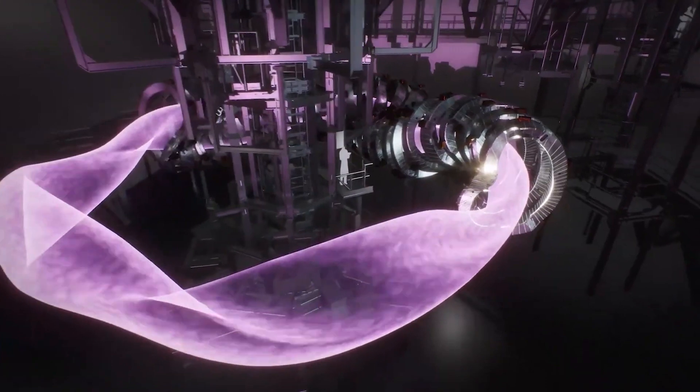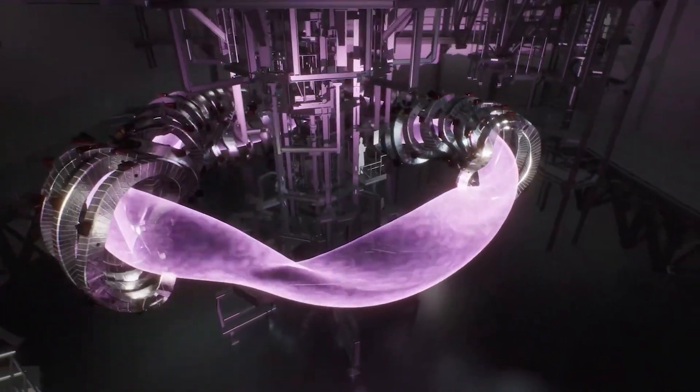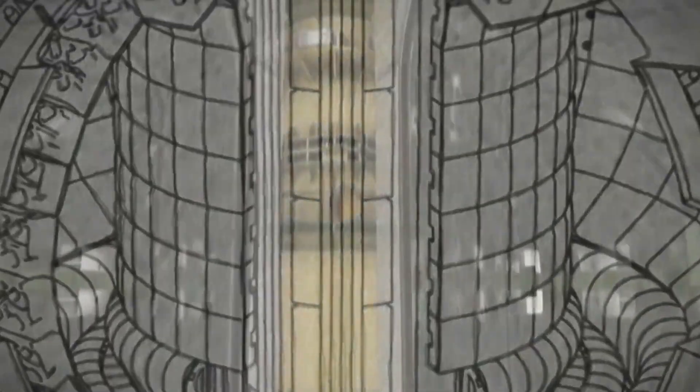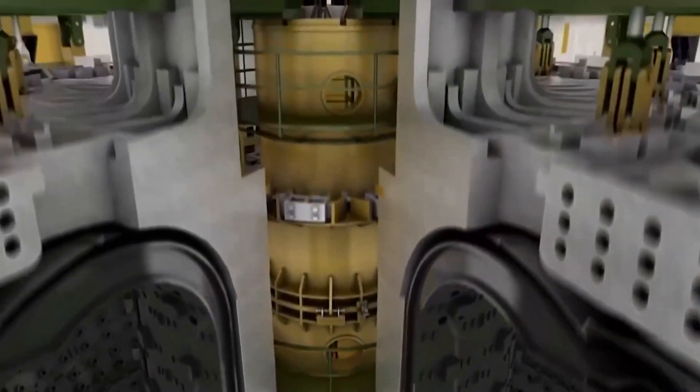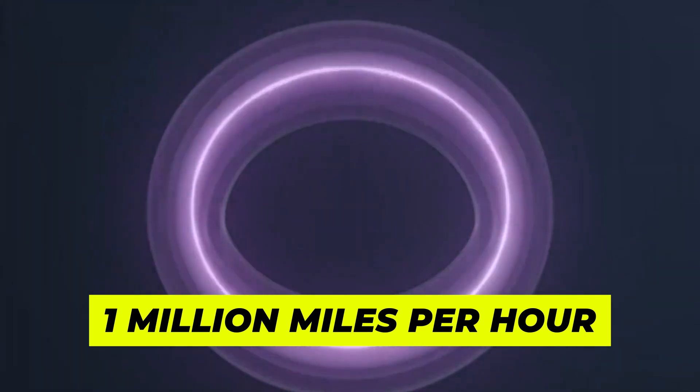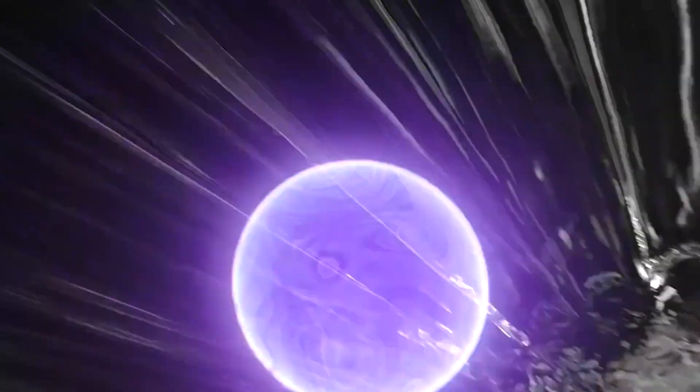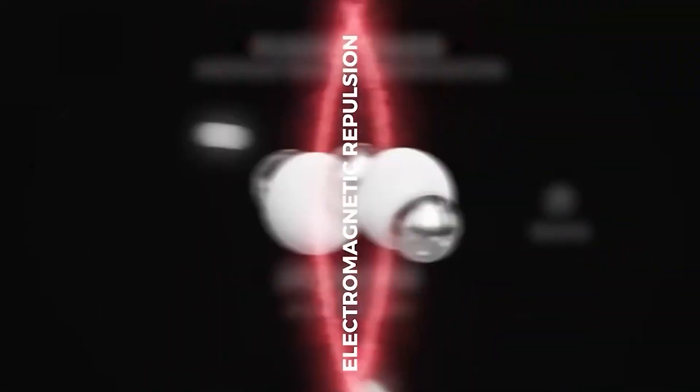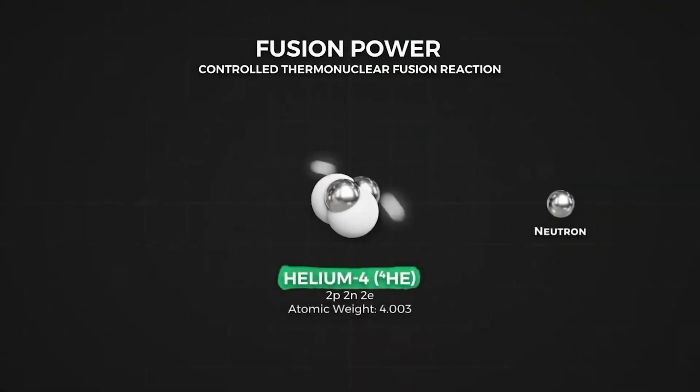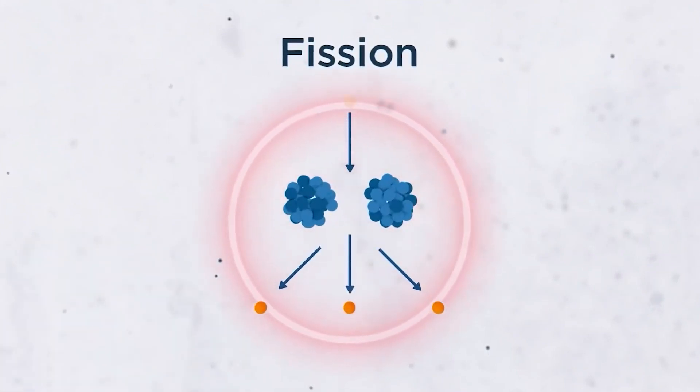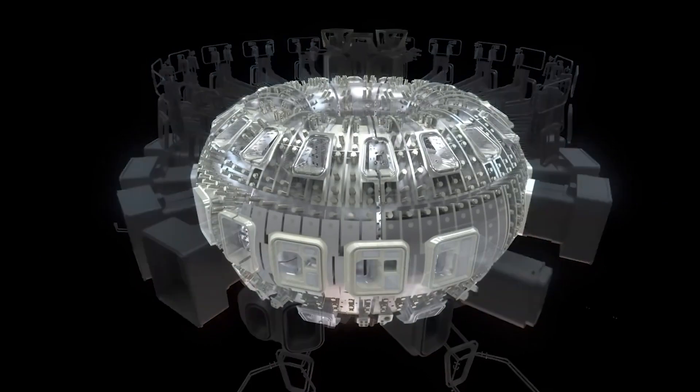With the FRCs formed on both ends of the fusion device, Helion Energy employs a sequence of powerful electromagnets to accelerate the FRCs toward each other at speeds exceeding 1 million miles per hour. This acceleration, often likened to squeezing toothpaste out of a tube, is achieved through a peristaltic acceleration mechanism. By increasing the magnetic field behind the fusion fuel, a pressure is exerted that propels the plasma forward. This acceleration is achieved through a meticulously designed series of electromagnets that are strategically positioned to guide and accelerate the FRCs.